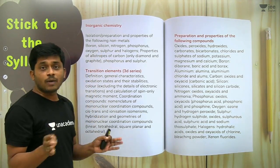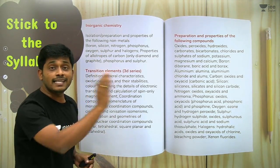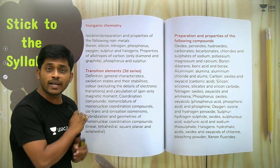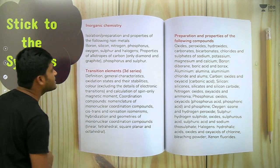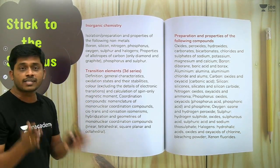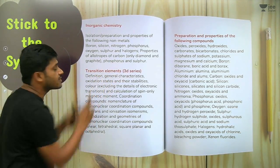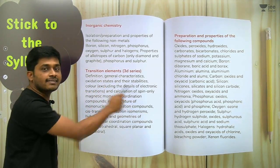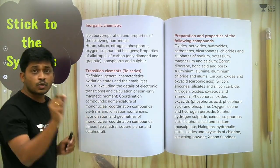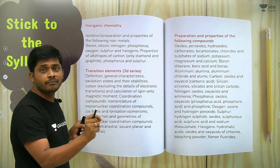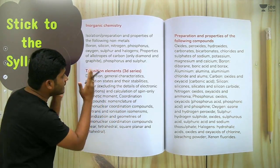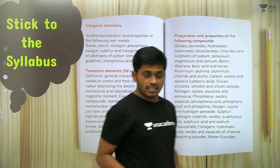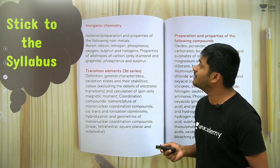Similarly, only silicon properties are needed, not germanium or tin — don't worry about those. For transition elements, the syllabus specifies general characteristics, oxidation states, oxidation state stabilities, and so on. Go through each and every term listed, underline it, and refer to that term in the book. The first step is: stick to the syllabus.